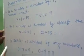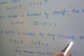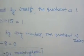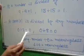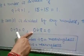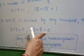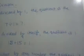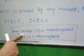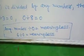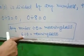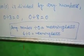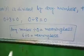Our third property: if 0 is divided by any number, the quotient is 0. For example, 0 divided by 3 — the quotient will be 0. Another example: 0 divided by 8 is equal to 0. Also keep in mind that any number divided by 0 will be meaningless. For example, 6 divided by 0 will not give any answer — it is meaningless.